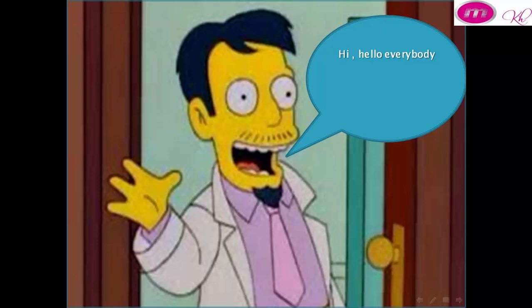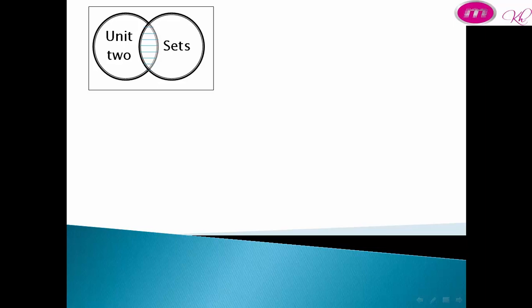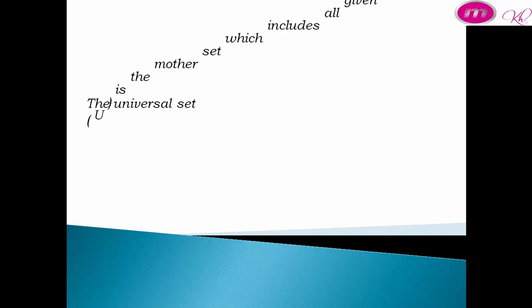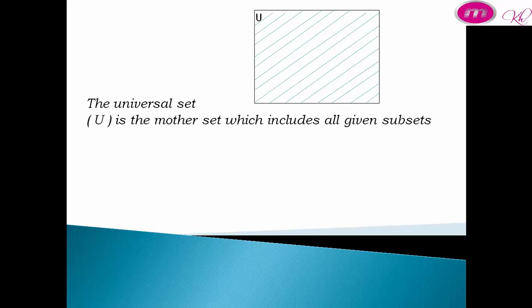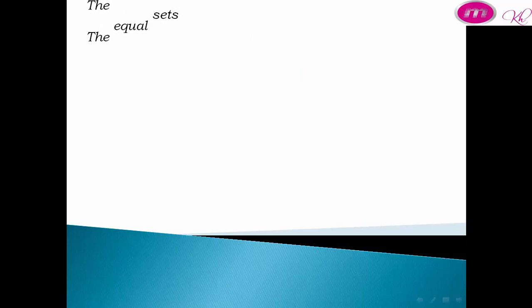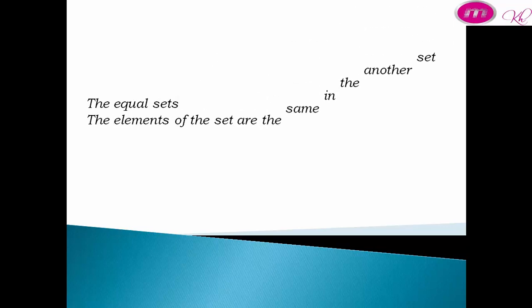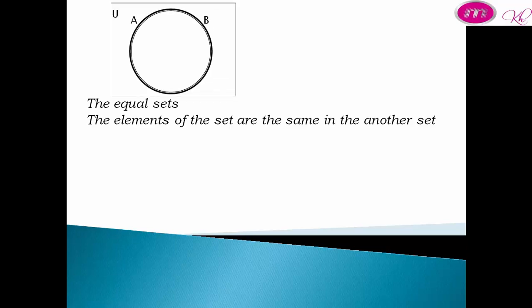Hi, hello everybody! Today we complete Unit 2: Sets. The universal set U is the mother set which includes all given subsets. The equal set: the elements of the set are the same as in another set.